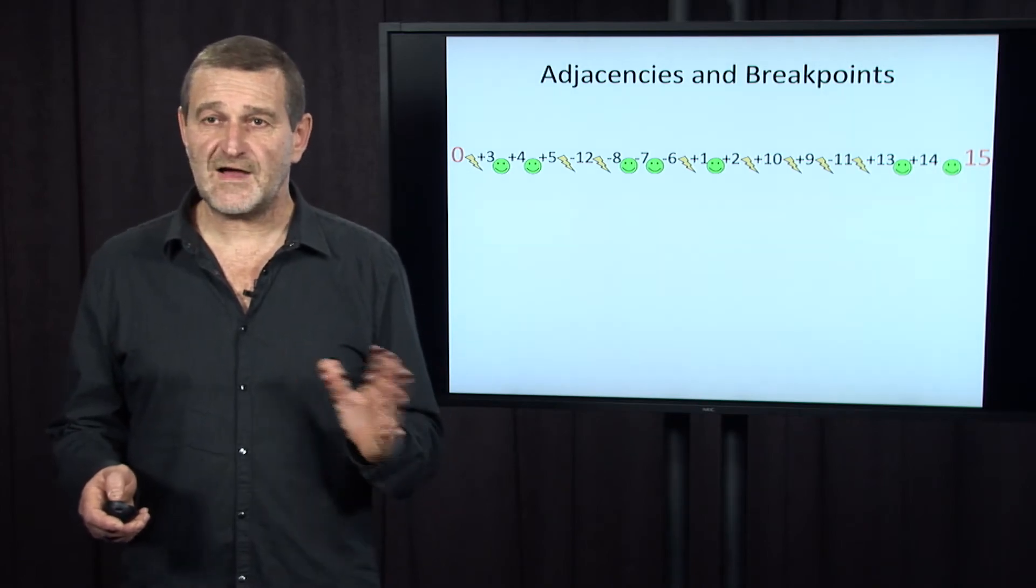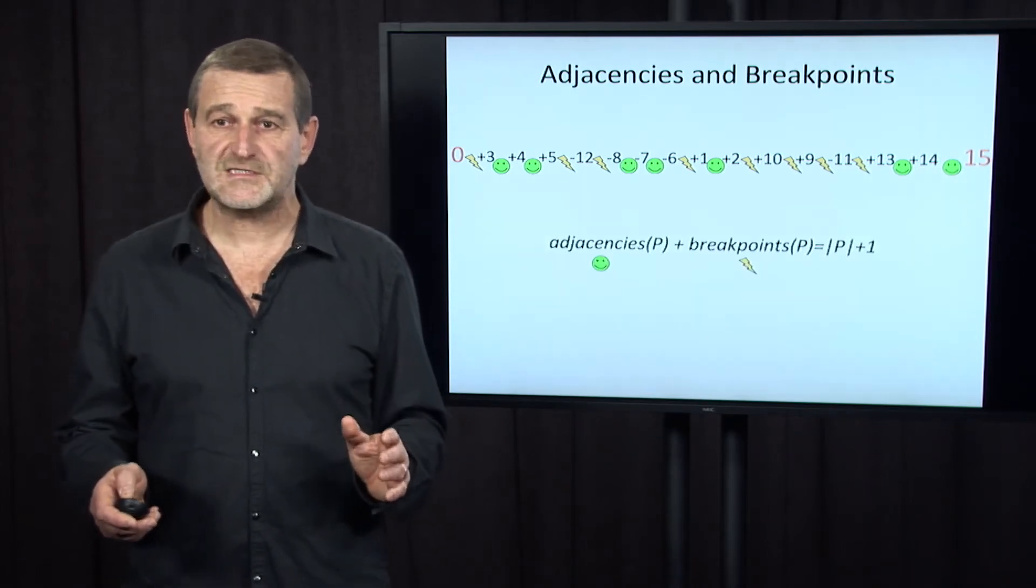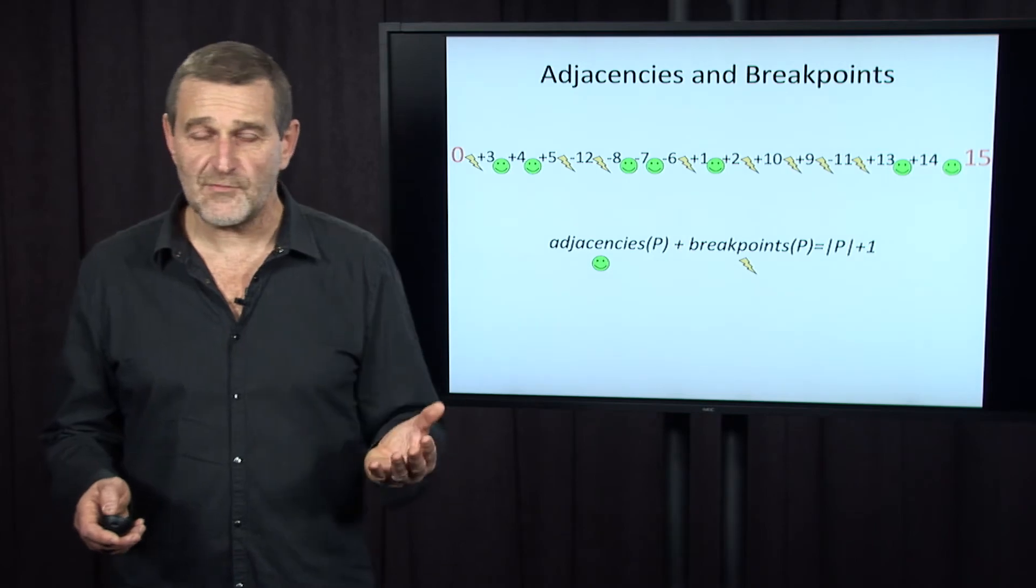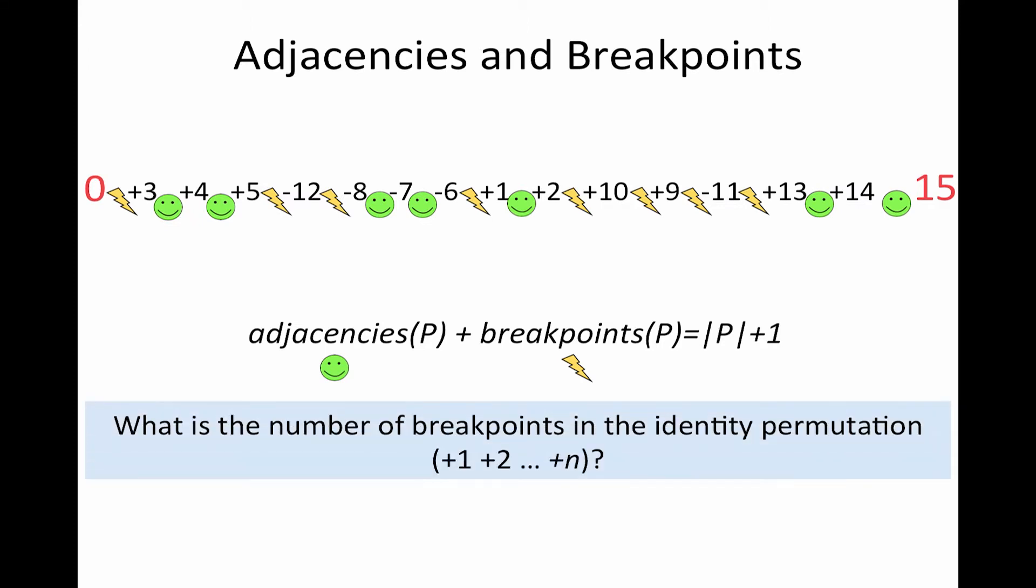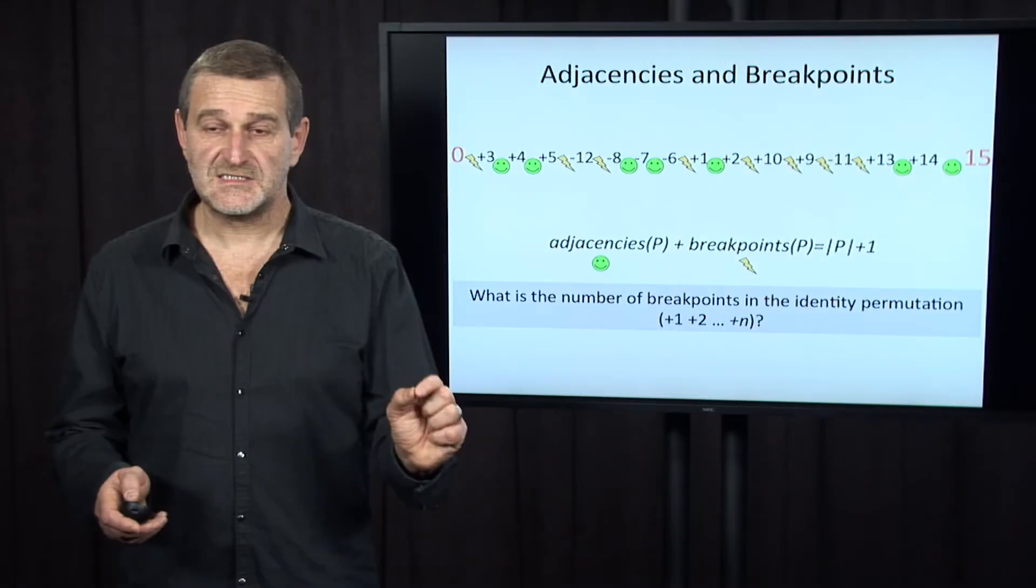So after we define adjacencies and breakpoints, clearly number of adjacencies plus number of breakpoints in the permutation equals to length of the permutation plus one. And before we go further, I want to ask you the question, what is the number of breakpoints in the identity permutation: plus one, plus two, plus n? Of course, this permutation has no breakpoints, zero.